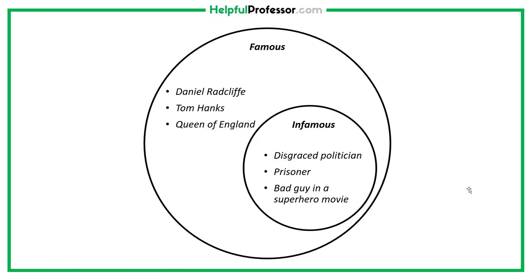Let's look at some examples. Some famous people might be Daniel Radcliffe, Tom Hanks, and the Queen of England. These are all famous people that most of us would recognize on television, but they're not infamous because they're not primarily known for doing something bad.